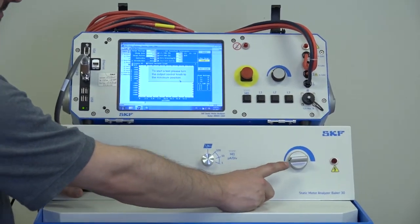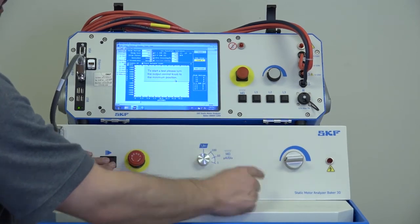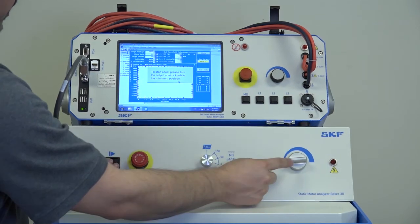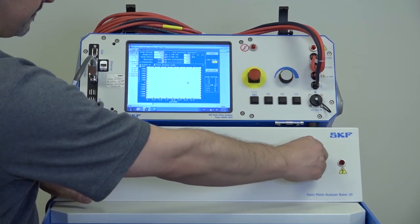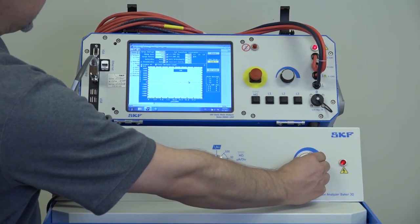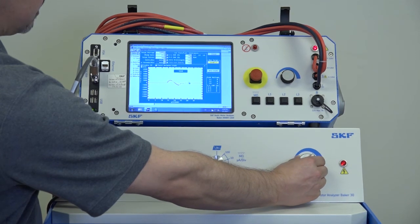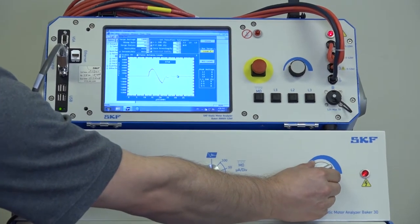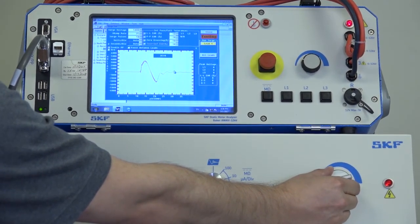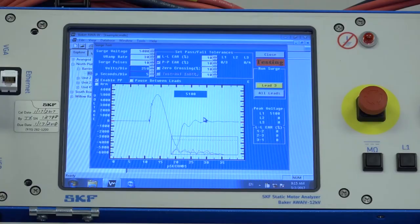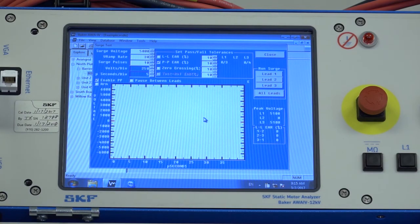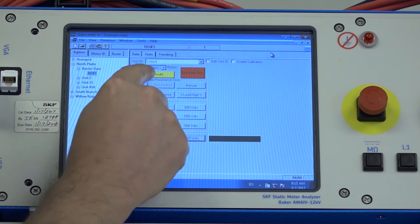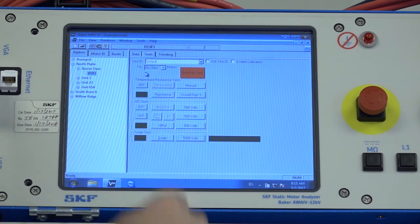Remember that the voltage control knob has to be all the way counterclockwise in the zero volts position, otherwise it won't initiate the test. It says to start a test, please turn the output control knob to the minimum position. Once we're at the minimum position, now we can increase the voltage and it'll auto scale the microseconds per division. We want to increase the voltage slowly until we achieve the appropriate test voltage. Now that we're completed with the test, we'll just hit close, and then we want to make sure we hit the save results button to save the test.